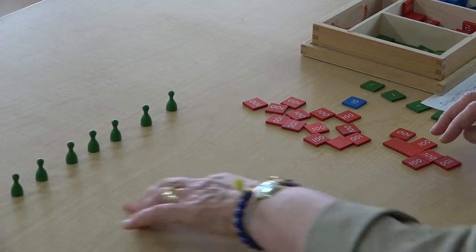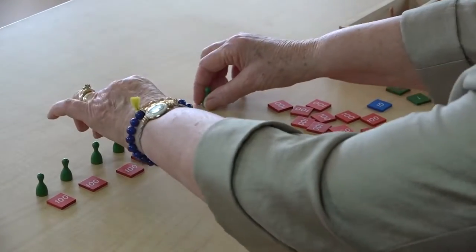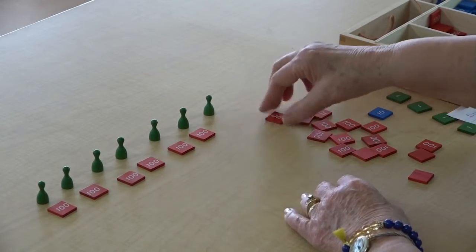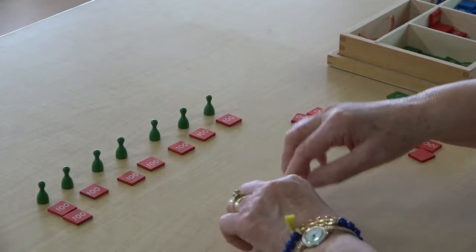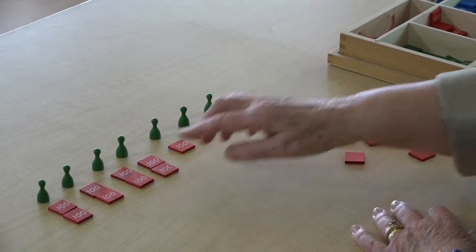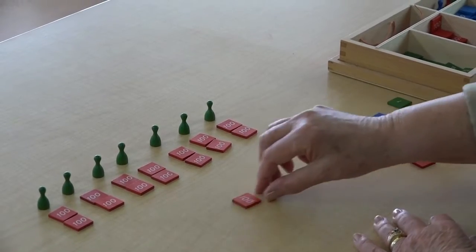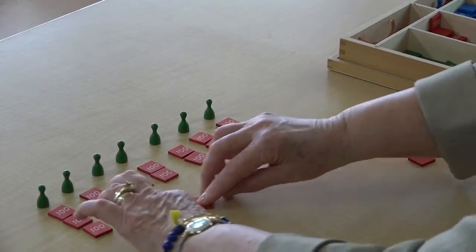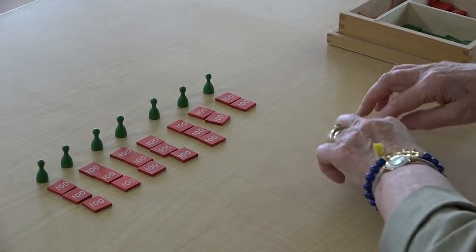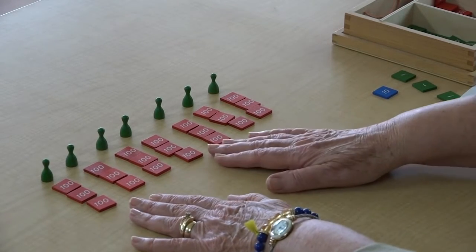So we give one to each skittle and we just keep sharing them until we run out or until we can't share equally anymore. And of course the children will help distribute these. Okay, do we have any left? No. So we have all of our hundreds shared equally.